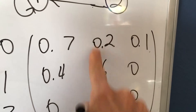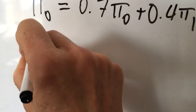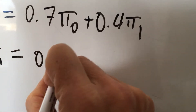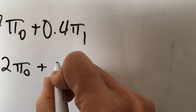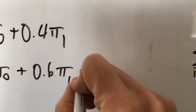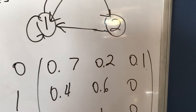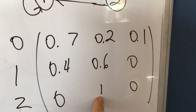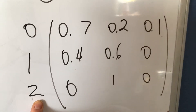This column gives you the probabilities of transitioning to state 1. The long-run probability of being in state 1 equals 0.2 times the long-run probability of being in state 0, plus 0.6 times pi 1, plus 1 times pi 2. The one-step transition probability of going from state 2 into state 1 is 1, and the long-run probability that you started in state 2 is pi 2.